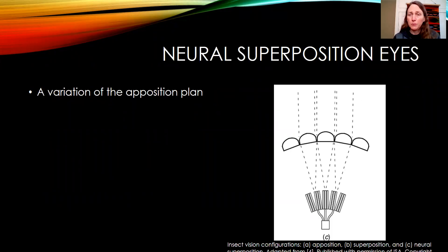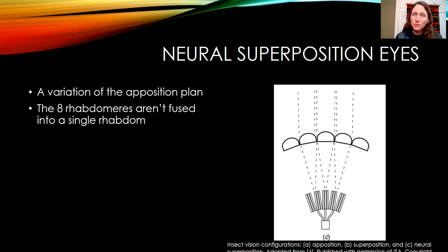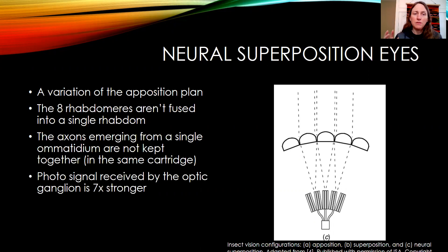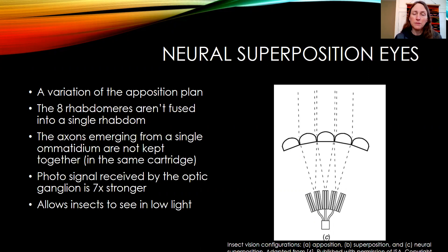The neural superposition eye is a variation on the apposition plan. The eight rhabdomeres aren't fused into a single rhabdom, so they can detect light across a larger surface area. Additionally, the axons — the nerves — that emerge from a single omatidum are not kept together in the same cartridge, which allows the photosignal to be received by the optic ganglion with about a seven times stronger signal. So these eyes are more sensitive, especially in low light. Organisms that deal with low light conditions have most likely evolved a neural superposition type eye.